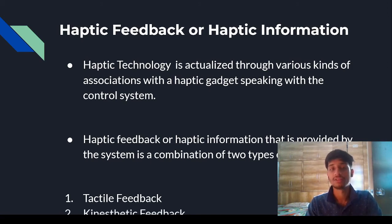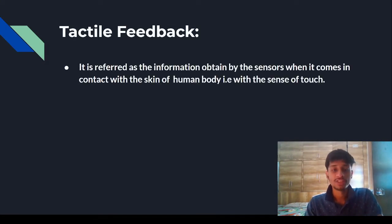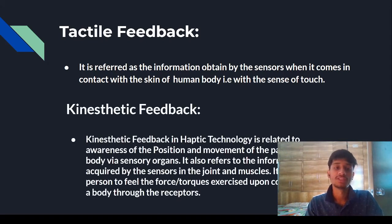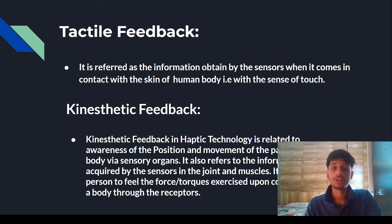Tactile feedback refers to the information obtained by the sensors when it comes in contact with the skin of the human body — for example, with the sense of touch. Kinesthetic feedback is a haptic technology related to awareness of the position and movement of the parts of the body via sensory organs. It also refers to information acquired by sensors in the joints and muscles, allowing a person to feel force, pressure, or torque exerted upon contact with the body through receptors.